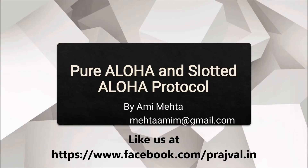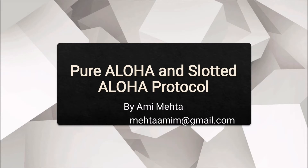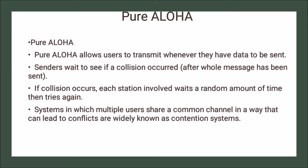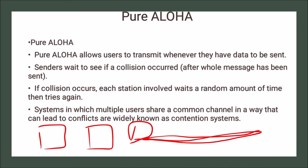Hello everyone, myself Ami Mehta. Let us discuss random access protocols: pure aloha and slotted aloha. First, let us discuss pure aloha. Pure aloha allows users to transmit whenever they have data to be sent. For example, on a medium with five nodes, if a node wants to transfer data, it transmits whenever it has data to send. The sender then waits to see if a collision occurred.